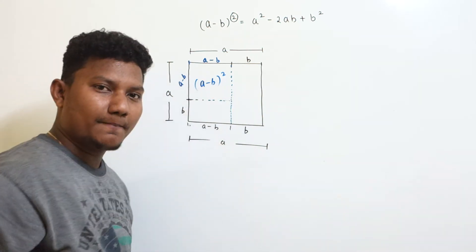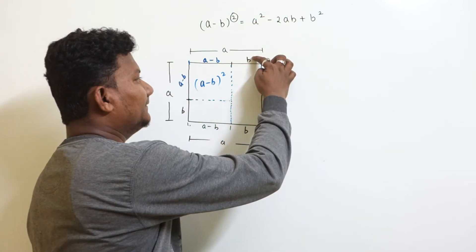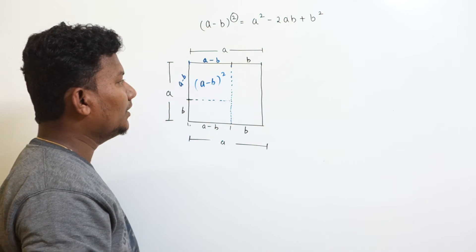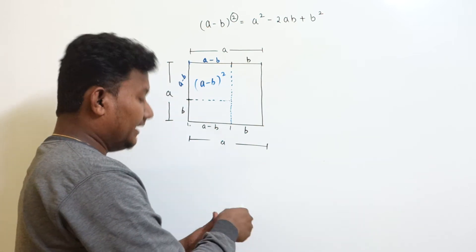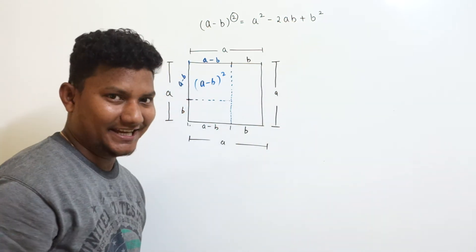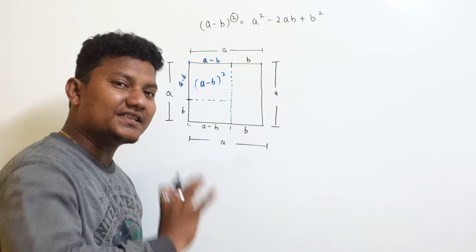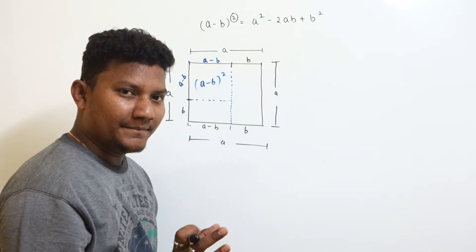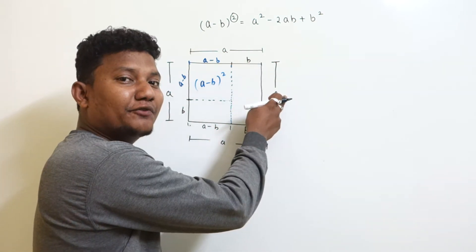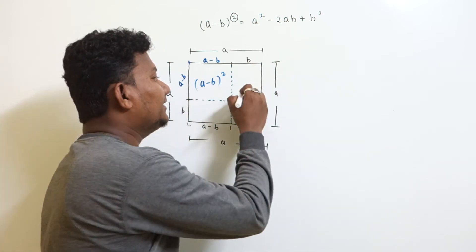Focus on the second box. Here one side is 'b' and the other side is 'a'. Since the adjacent sides are different, this quadrilateral is a rectangle. The area of a rectangle is length into breadth, so the area of the second box is a times b, that is ab.